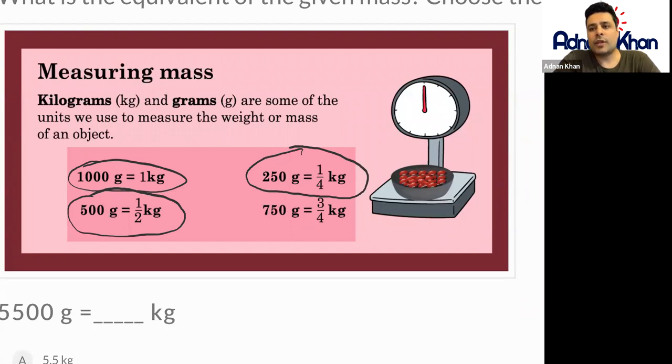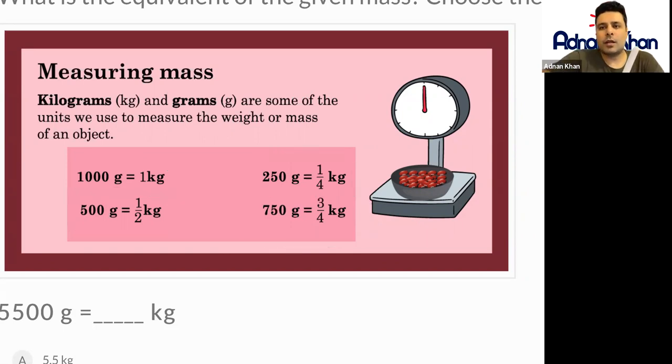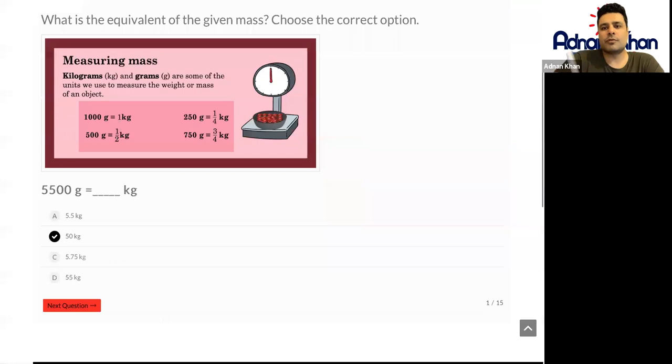And then three quarters of a thousand grams is 750 grams. So what we do is we turn the kilograms into grams and then we find the half and the quarter and three quarters. Let's look at some examples first of all.